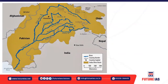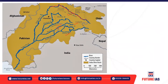Looking at the figure, the Indus originates near Mansarovar in Tibet and flows in the northwest direction, entering India at Ladakh. Its five main tributaries — Jhelam, Chenab, Beas, Satluj, and Ravi — meet the Indus at Mithankot before it enters Pakistan and flows towards the Arabian Sea.